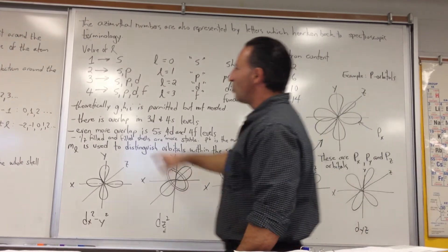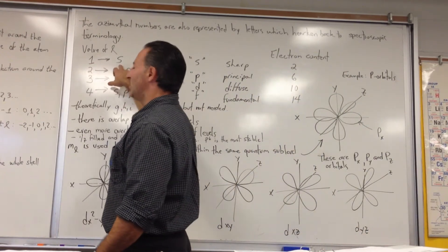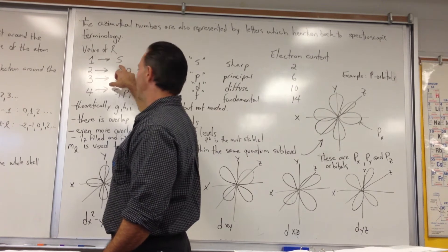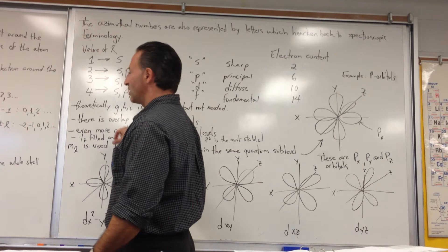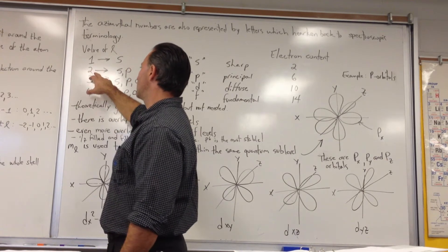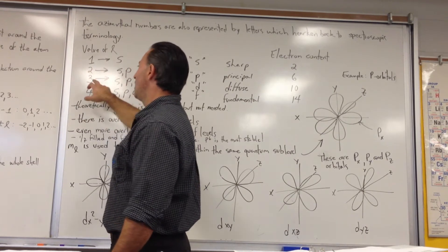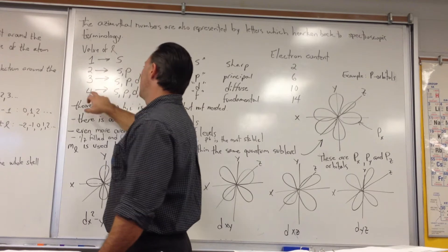Now, if the value of L is one, then you get S as azimuthal. That's how it's represented when we draw an electron configuration. If the value of L is two, you can have S or P. If it's three, you have S, P, or D.